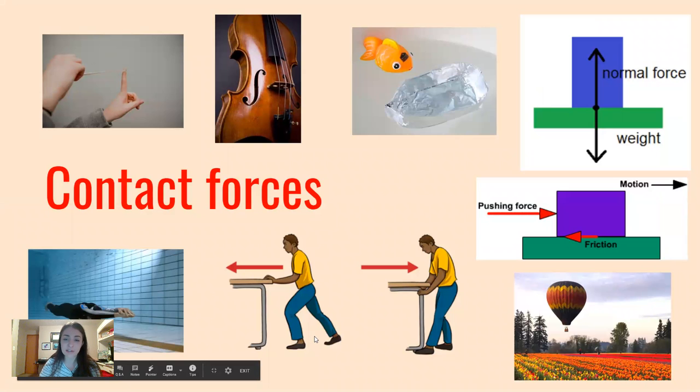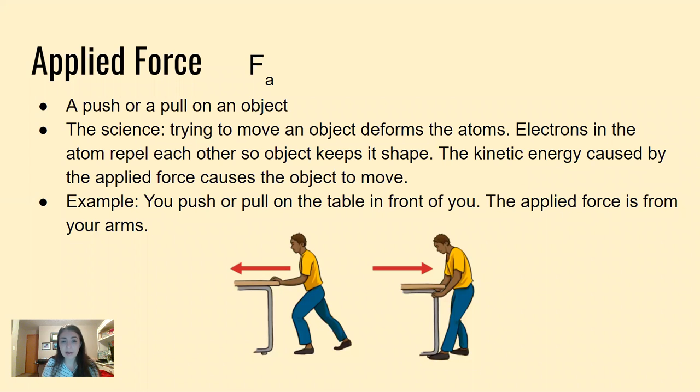Now we're going to talk about contact forces. An applied force is a push or a pull on an object. This is the most basic of the forces. The science means you're trying to move an object, it deforms the atoms. Electrons in atoms repel each other so the object keeps its shape. If you push or pull on a book on your desk, that's applying a force. We use F with a little subscript a to denote that is an applied force.